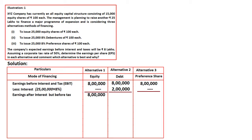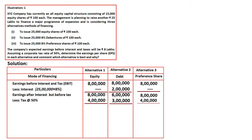Earnings after interest: Alternative 1 is ₹8 lakhs, Alternative 2 is ₹6 lakhs (₹8L minus ₹2L interest on 25,000 debentures at 8%), and Alternative 3 is ₹8 lakhs. From this we deduct tax at 50% as given in the question. Tax is calculated on earning after interest: 8 lakhs × 50% = 4 lakhs; 6 lakhs × 50% = 3 lakhs; 8 lakhs × 50% = 4 lakhs. After deducting tax, earnings after tax are: ₹4 lakhs, ₹3 lakhs, and ₹4 lakhs respectively.